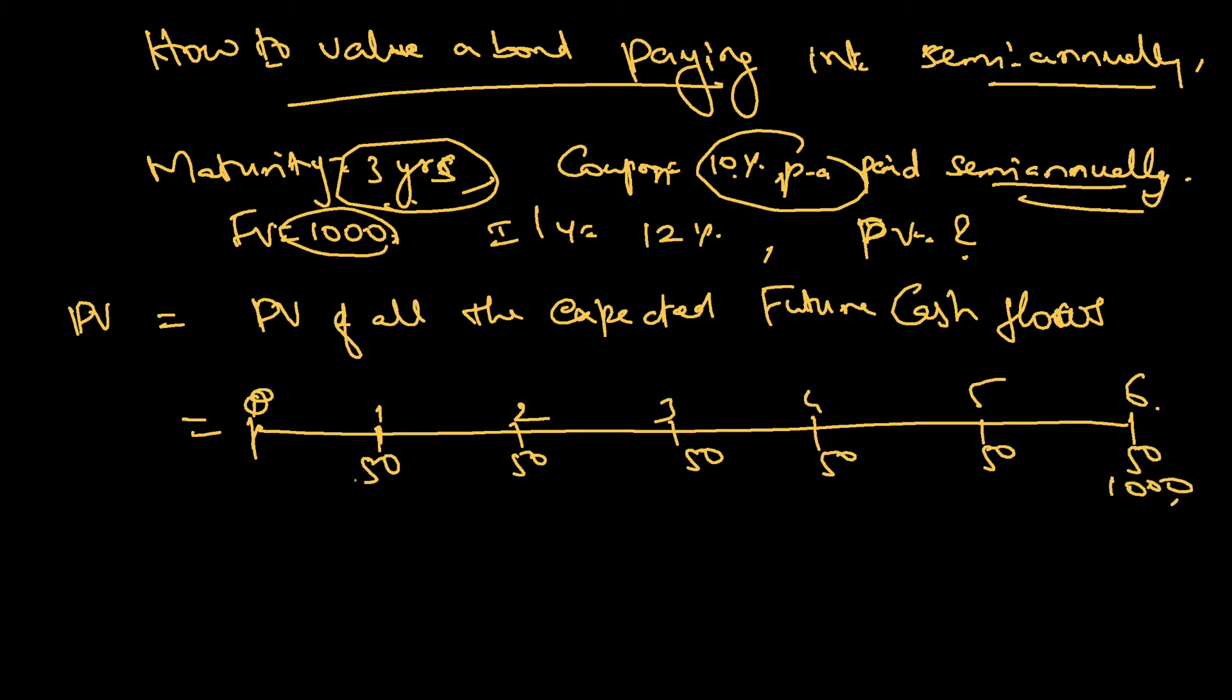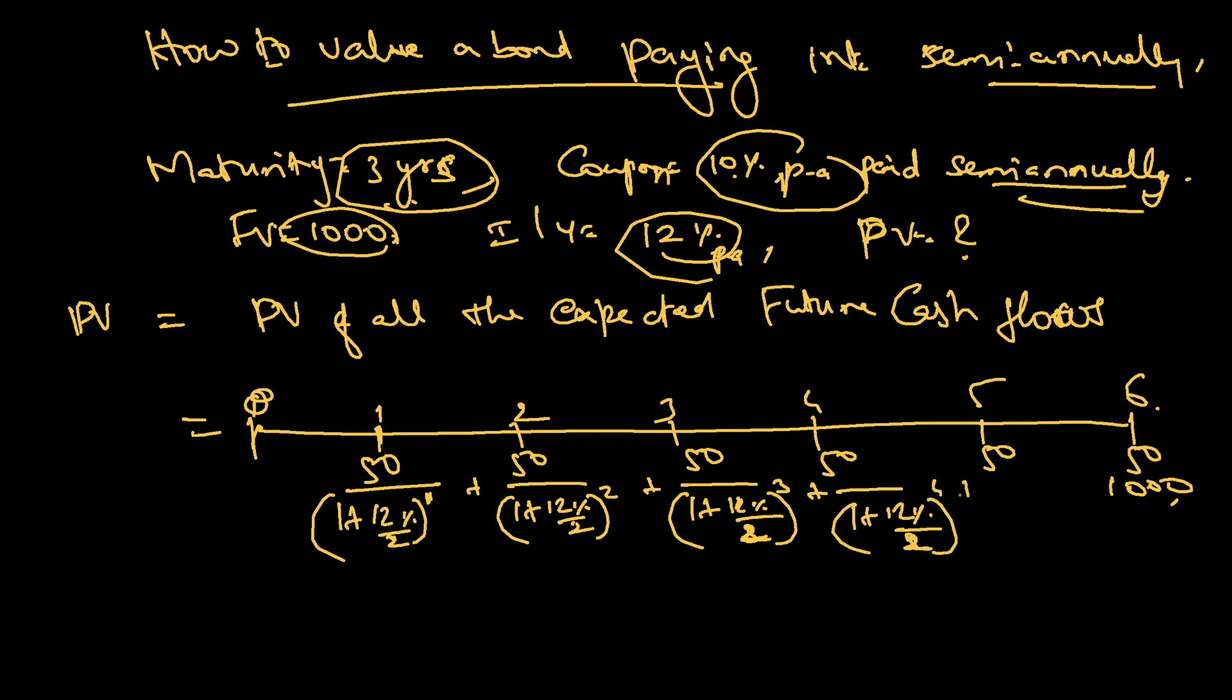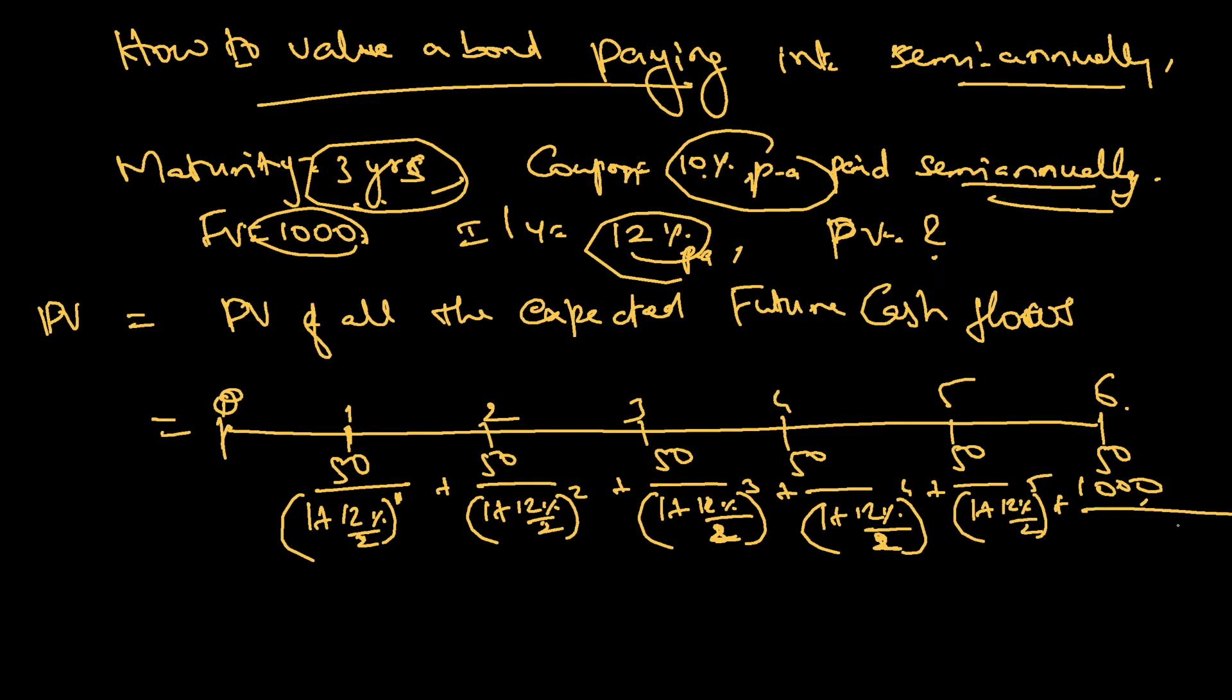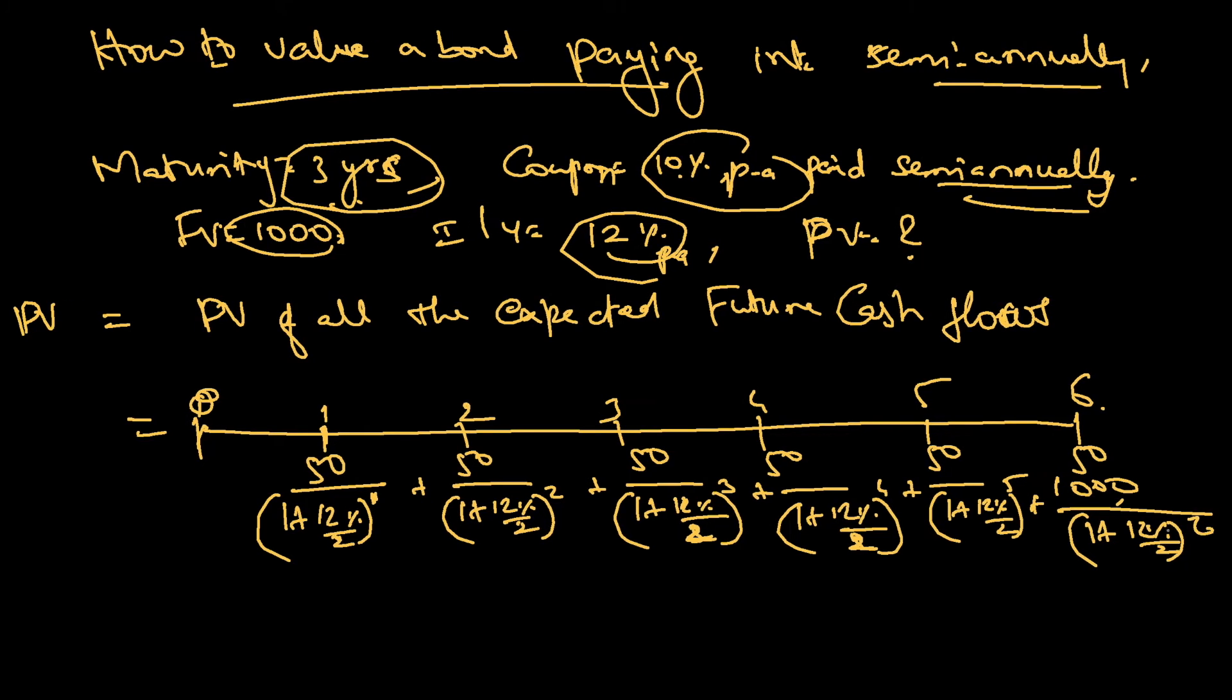Now I will discount it. Discounting is 12 percentage semi-annually, so 12 percentage by 2. First period: 50 divided by 1 plus 12% by 2. Plus for the second period, plus for the third period. Similarly for the fourth period, fifth period, and the last one is 1050 divided by 1 plus 12% by 2 for six periods.